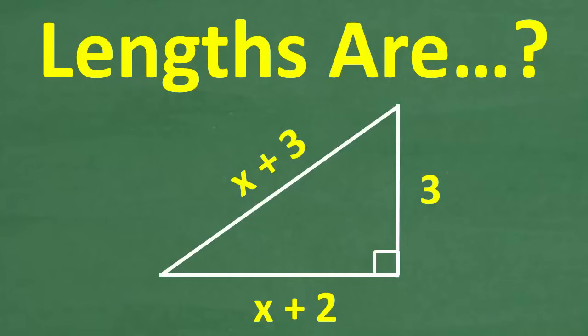Can you find the lengths of this triangle? All right, now the figure here, obviously we have a triangle. This side is 3, this side is x plus 2, and this side right here is x plus 3.